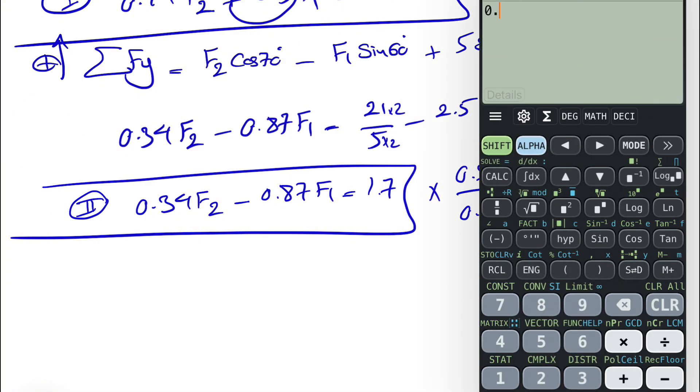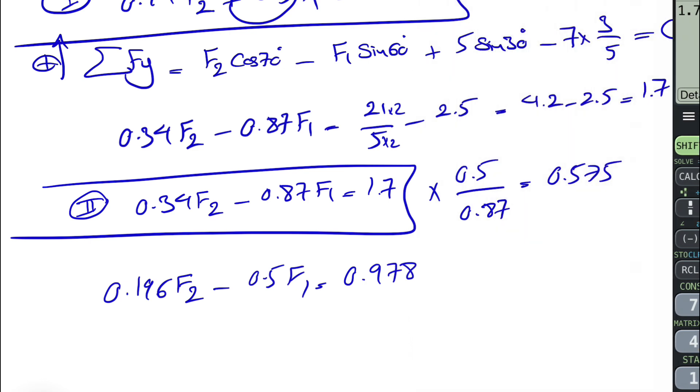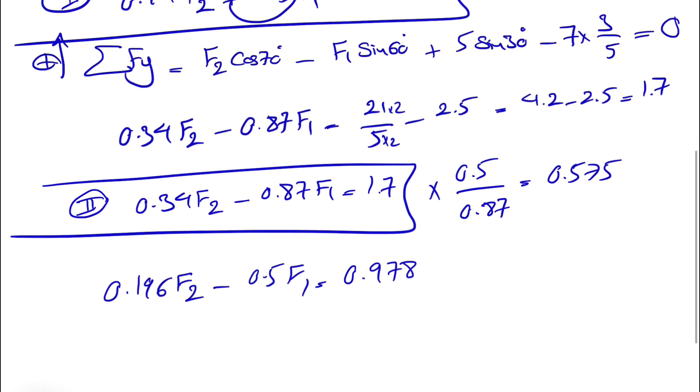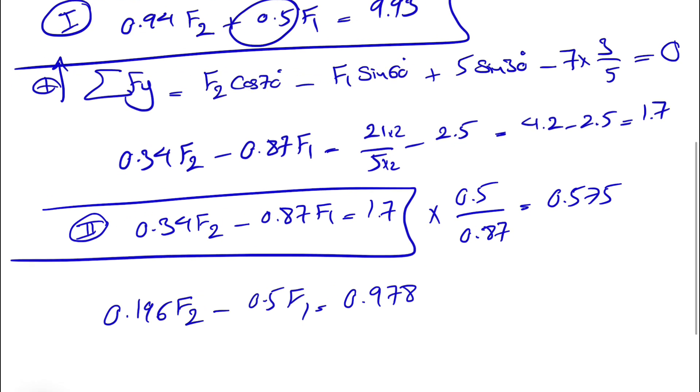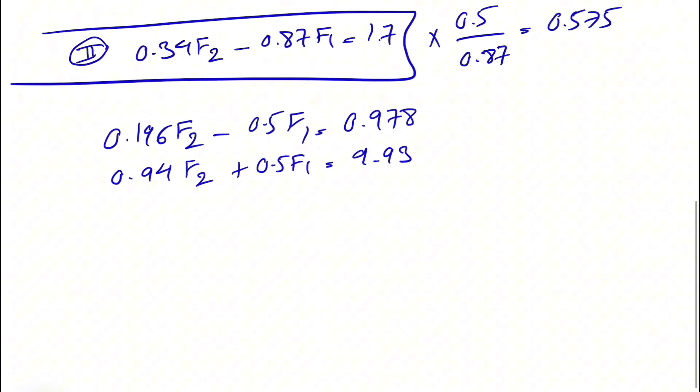So let's multiply that, 0.34 times 0.575, it's going to be 0.196 F2 minus, and that's the 0.5 that we're looking for, and also 1.7 times 0.978. So now we can add these two equations. The first equation is what we had in the first line, 0.94 F2 plus 0.5 F1 is equal to 9.93. So if we add these two, we get rid of these two.